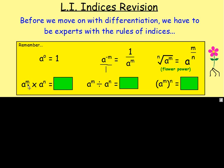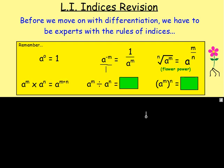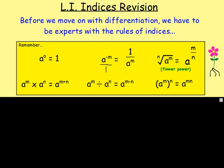If you have a to the power of m times a to the power of n, the trick is you just add your indices. If you divide — a to the power of m divided by a to the power of n — you just subtract the indices. And if you end up with a to the power of m to the power of n, so if it's to the power of to the power of, all you do is multiply them together — a to the power of m times n.